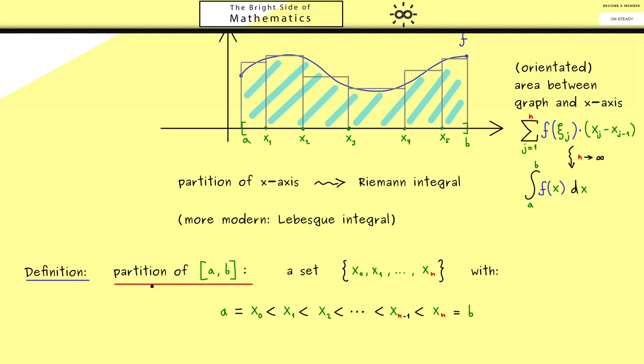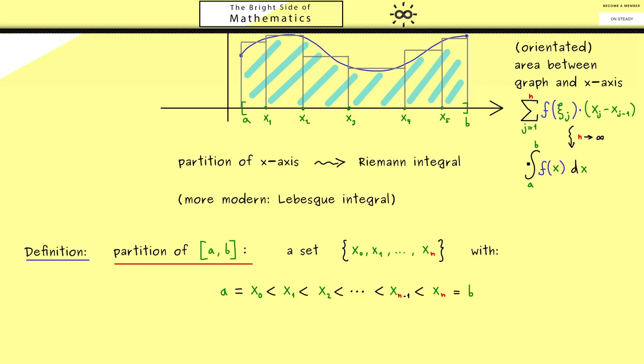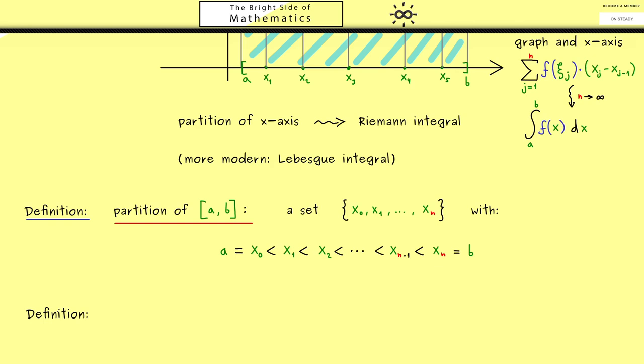This is the whole definition of the notion partition of an interval. Now for such a partition and a function f, we could calculate this sum here. However, because this could be hard, we should first start with functions f that are not so complicated. In fact, the functions we now consider are usually called step functions. To make everything simpler to read, I now use Greek letters for the step functions, so here we have a lowercase phi.